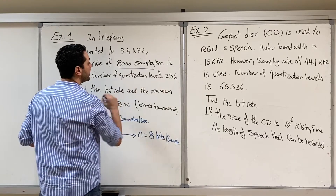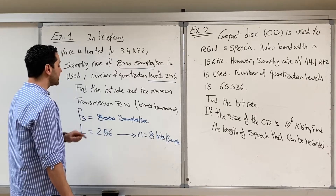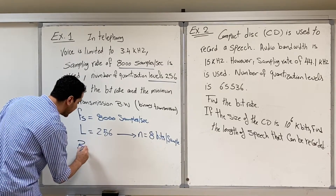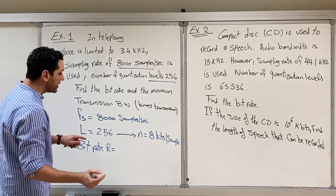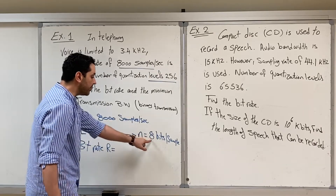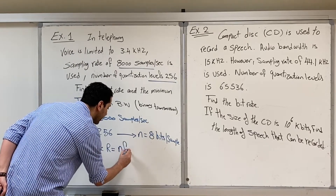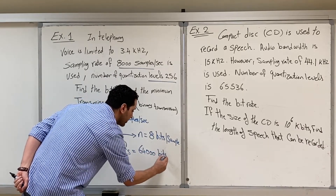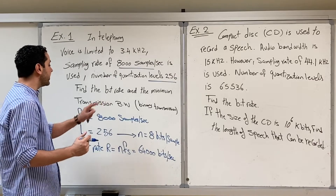We have F_S and we have n from the number of levels. Now find the bit rate and the minimum transmission bandwidth. The bit rate R is the number of bits per second: 8,000 samples per second times 8 bits per sample gives 64,000 bits per second. This is the bit rate.